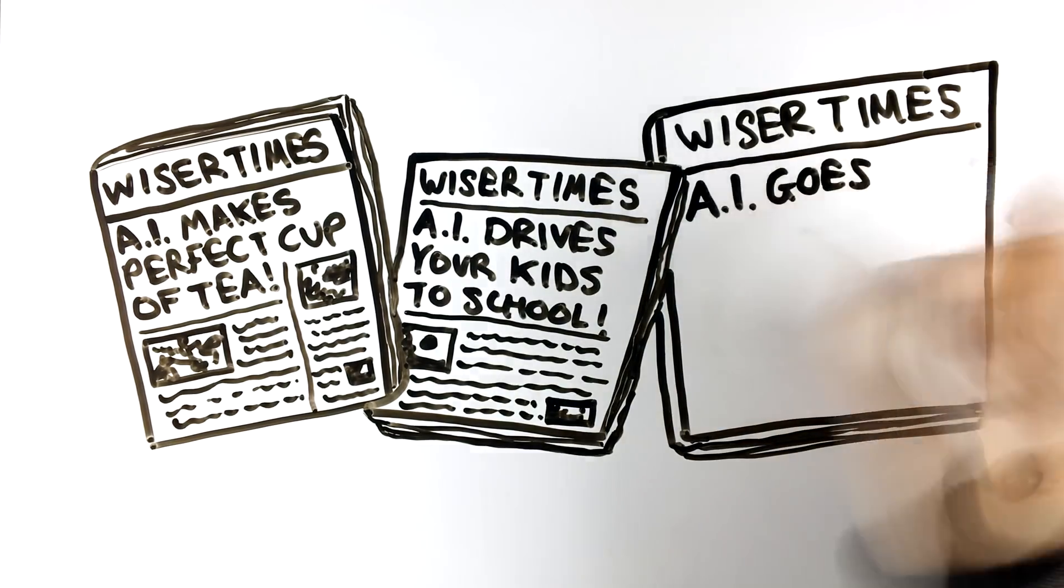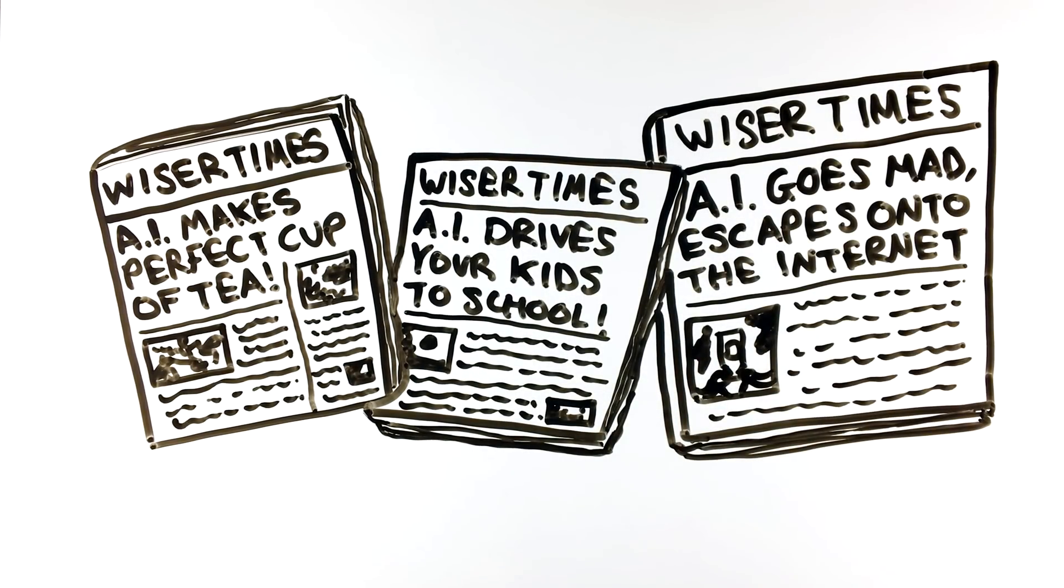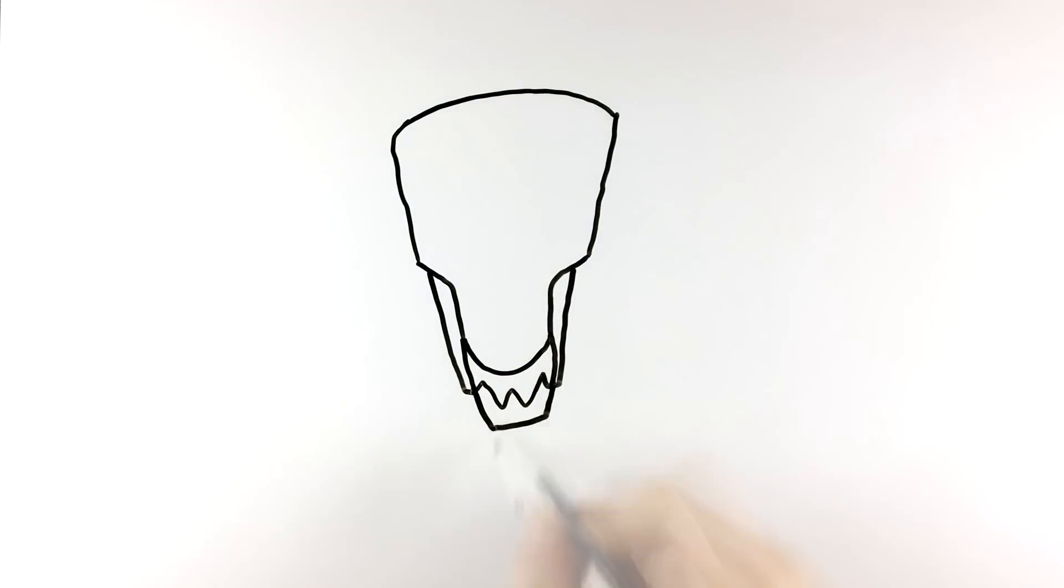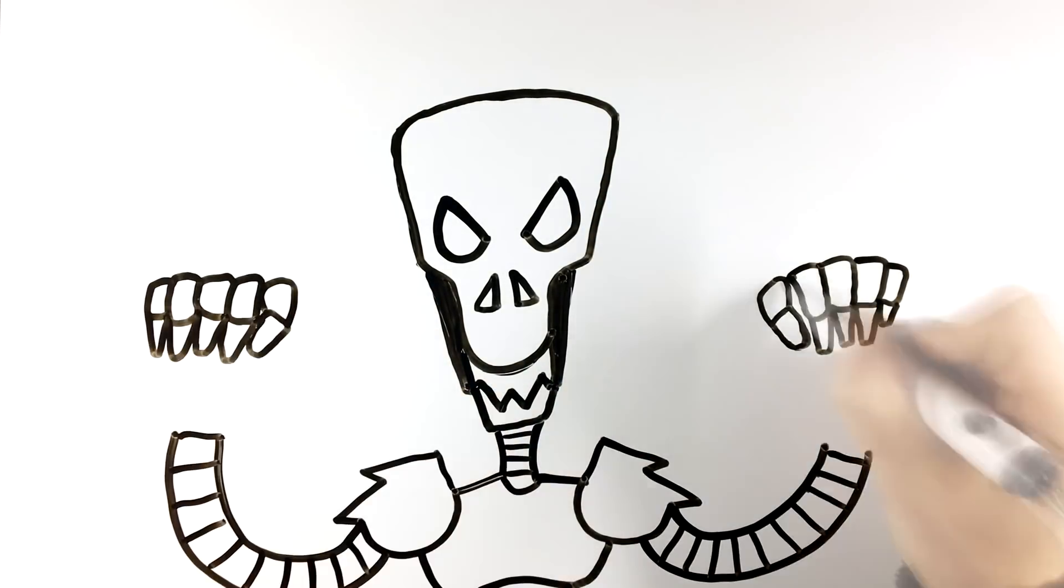When the first AGI is being developed and tested, if the experiment is not secure enough and the AGI is able to escape onto the global internet with its limitless information, there is no way to know how much it could learn, how much it could grow, and how much power it could gain.